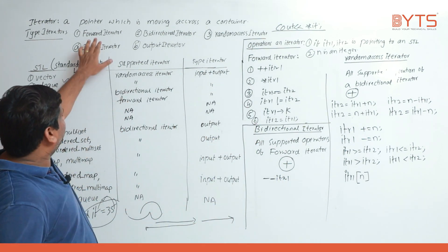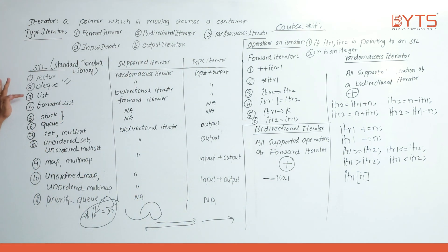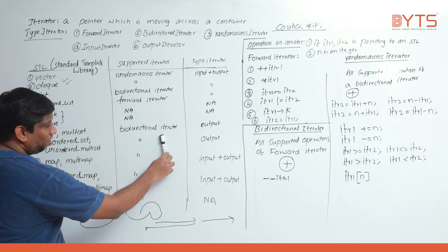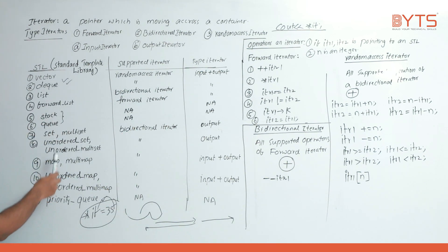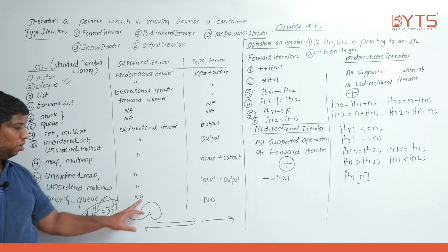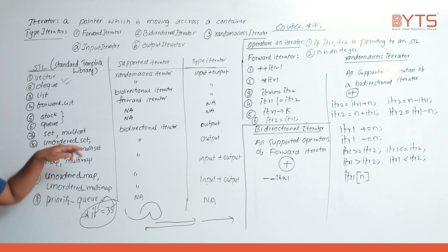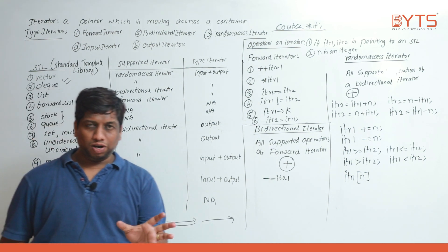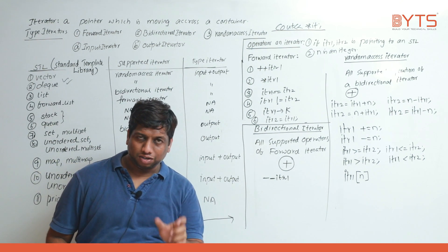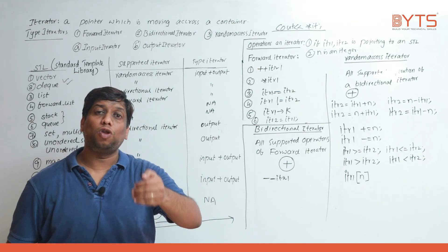To summarize: forward, bi-directional, and random access iterators are covered; input and output iterators are covered. Set and multi-set support bi-directional iterator and output iterator only. Priority queue does not support any iterator because it is not a separate data structure — internally it uses deque or an array.